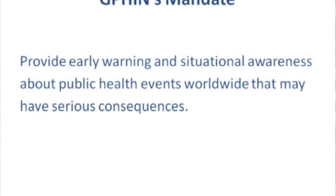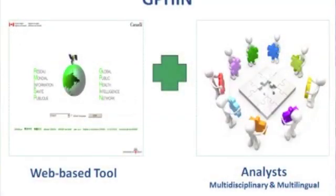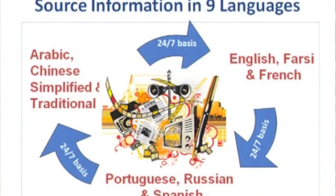The mission of GPHIN is to provide early warning and situational awareness about public health threats. Users of the system include the WHO, FAO, ECDC, and Ministries of Health. GPHIN consists of a monitoring tool to manage the flow of information, including processes such as duplication removal and relevancy.